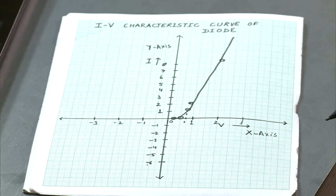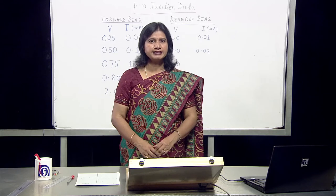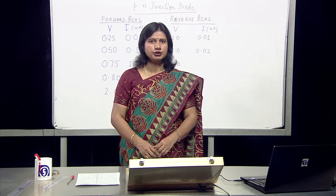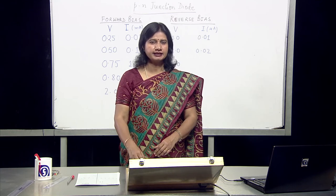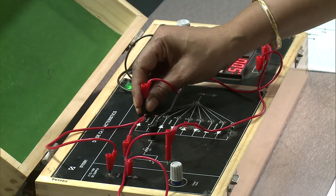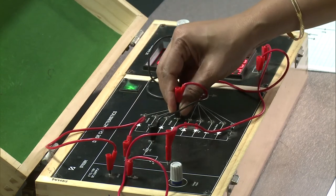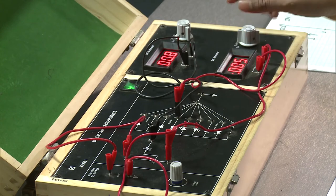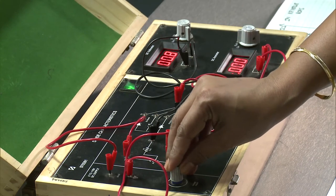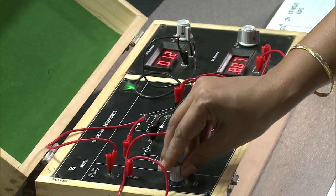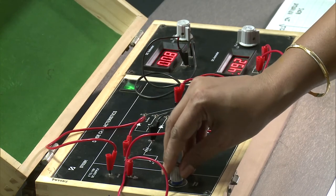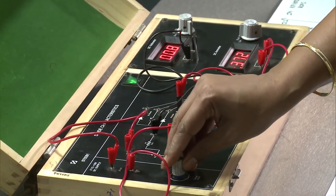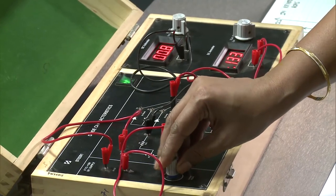Similarly, we will plot the reverse bias characteristic curve. Let's take the readings of the junction diode in reverse bias. The circuit is now changed to reverse bias. In the reverse bias, the current is in the microampere region. Now as we increase the voltage, what is observed is that for an increase in voltage, the current doesn't change much. For a voltage of 0.8 volts, the current is 0.24 microamperes.